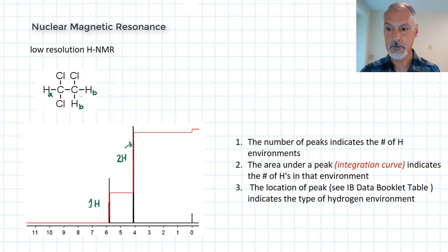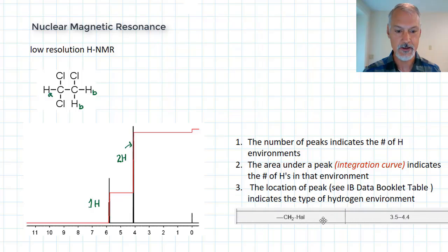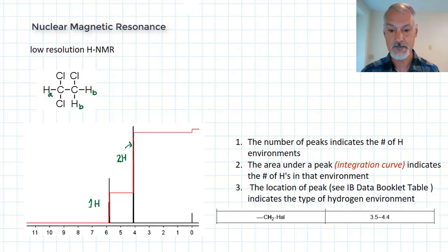Further evidence that perhaps the hydrogens exist in this environment can come from our IB data booklet. When we can look at the chemical shifts that are available, I think it's in table 27 in the IB data booklet. And we can see that a halogen, in this case chlorine, connected to two hydrogens, which we have in this case two hydrogens connected to chlorine, should exist somewhere between 3.5 and 4.4. So indeed, that's not too far off that particular range. So that's a quick review of what we learned in the standard level program.